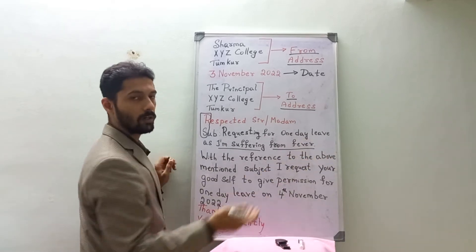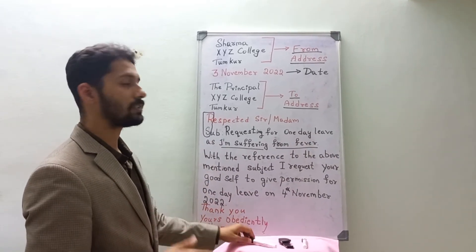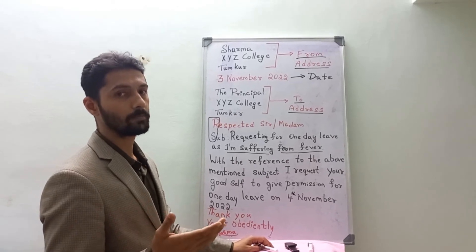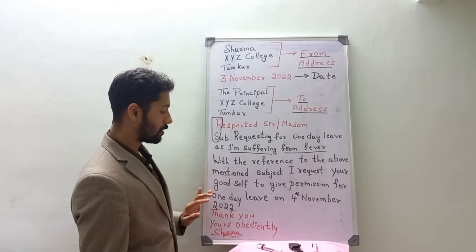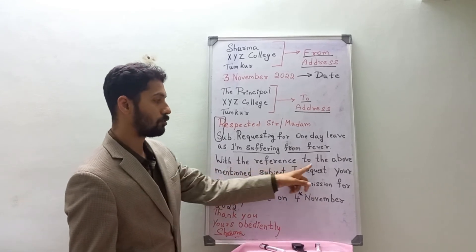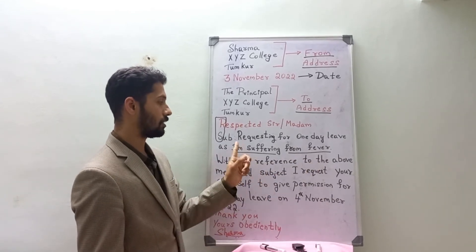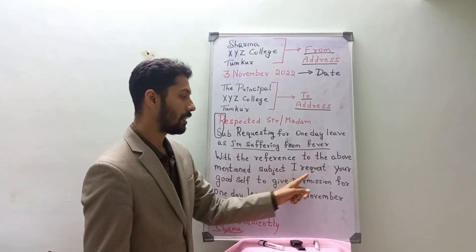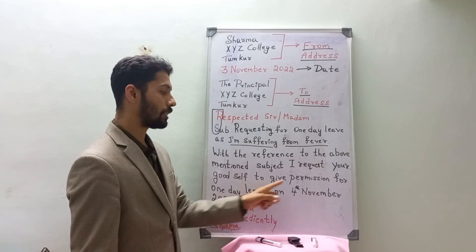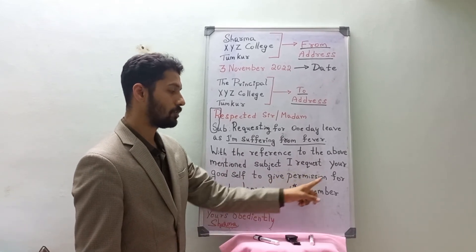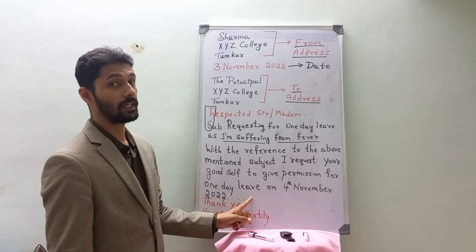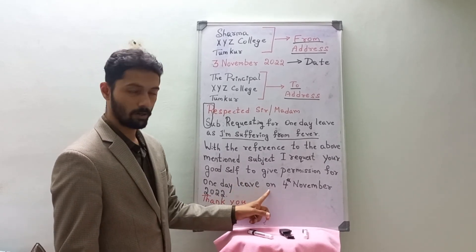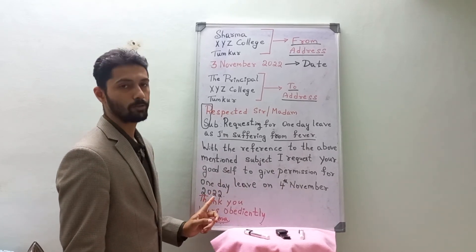You can write suffering from fever and cold, or suffering from headache, or suffering from stomach ache or stomach pain. Now the body of the letter: 'With reference to the above mentioned subject, that is requesting for one day leave as I am suffering from fever, I request your good self to give me permission for one day leave.' You should mention the date on which you are taking leave, for example, one day leave on 4th November 2022.